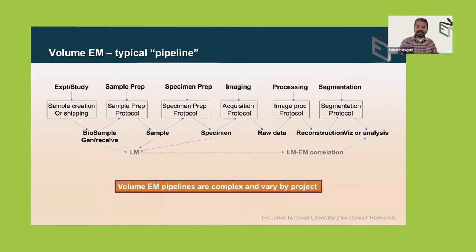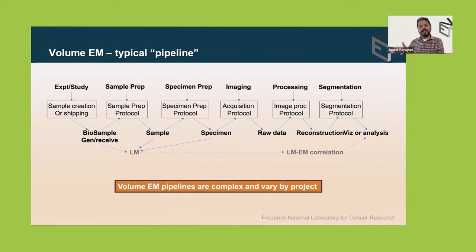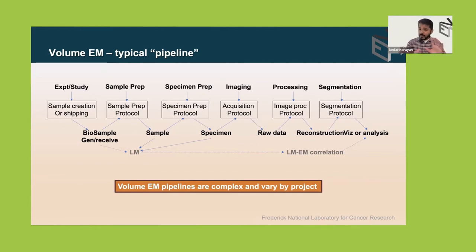Practically, the volume EM pipeline starts from your experiment or study, then a sample prep protocol generates a specimen ready for the microscope. You acquire images resulting in raw data, which are processed and reconstructed into a volume that can then be segmented for downstream visualization or analysis. These pipelines are complex and vary by project.